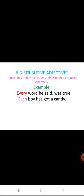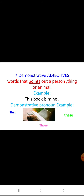Next is demonstrative adjectives. Demonstrative adjectives are words that point out a person, thing, or animal. For example: this book or that book; these books or those books. We use these and those for plural nouns. We use this and that for singular nouns. If the noun is closer to the speaker we use this; if it is far away from the speaker we use that.